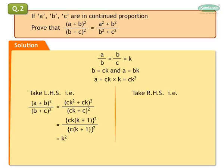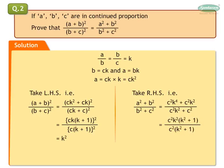Let us take the right hand side and write all terms in terms of C and K. That is, A square plus B square upon B square plus C square is equal to C square K raised to 4 plus C square K square upon C square K square plus C square. We get C square K square as common factor followed by (K square plus 1) upon C square into (K square plus 1). We cancel and simplify to get the right hand side also equal to K square. Therefore, left hand side is equal to right hand side. Hence, proved.